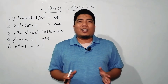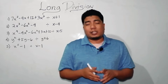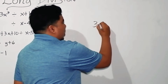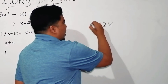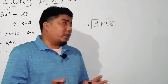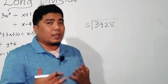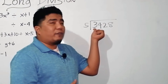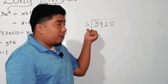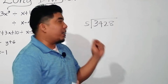Long division is basically the same as what you learned during your elementary days. If you can still remember, let's say we have 3,428 divided by 5. What we do here is we divide this number by our divisor, which is 5. We start with the first digit divided by the divisor. If that is not possible, we use 2 digits dividing by our divisor.